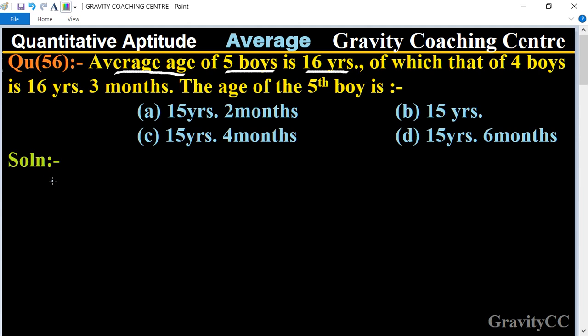So the total age of five boys equals 16 into 5, which equals 80 years.